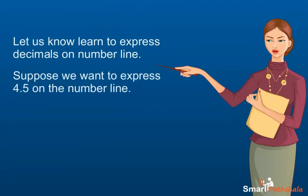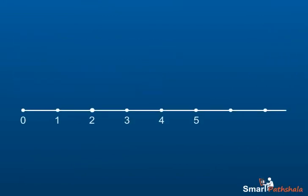Let us now learn to express decimals on a number line. Suppose we want to express 4.5 on the number line. Step 1: We first draw a straight line with points 0, 1, 2, 3, 4, 5.